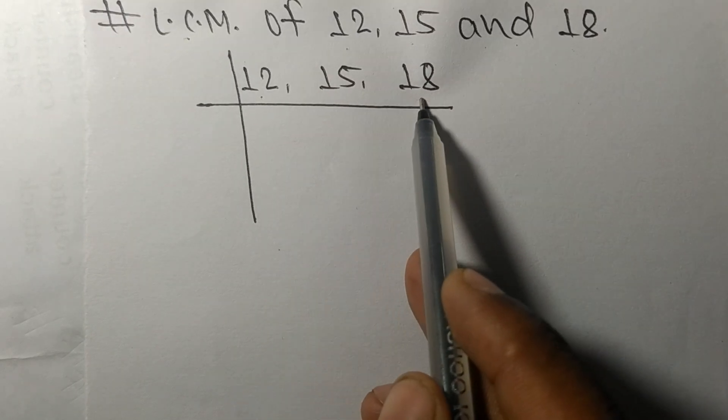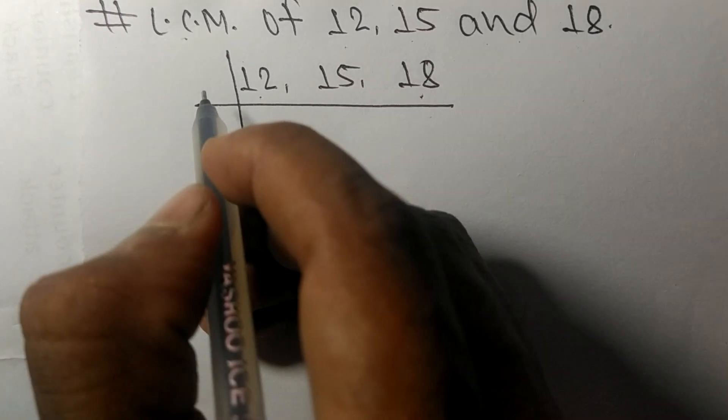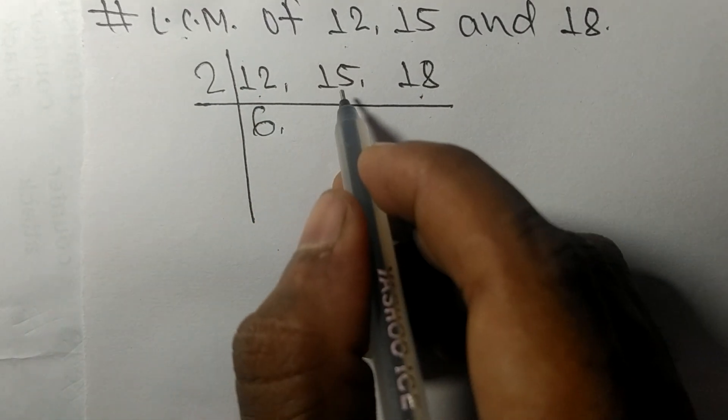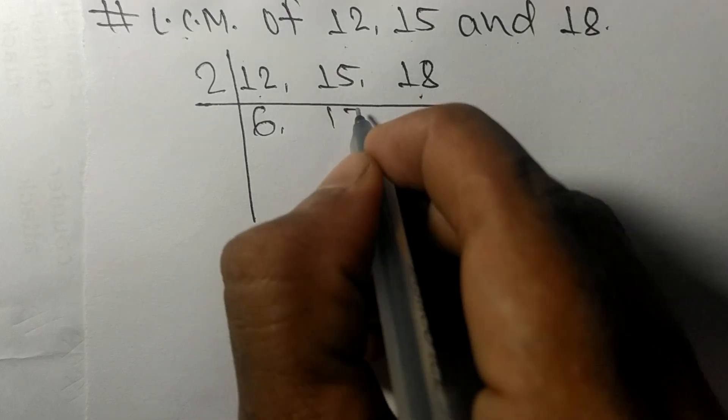12 and 18 are exactly divisible by 2. 2 times 6 means 12, 15 is not divisible so it stays the same, 2 times 9 means 18. So now we got 6, 15, and 9.